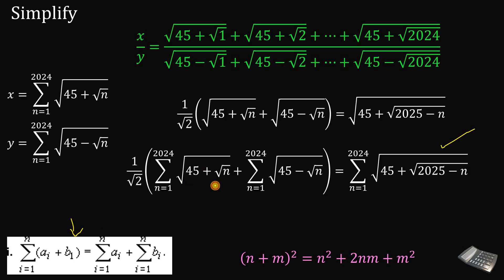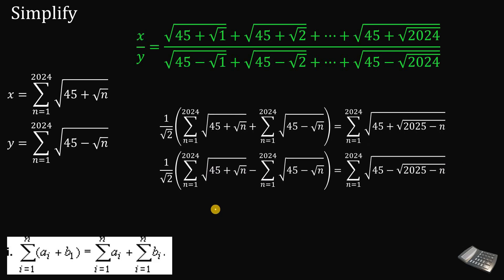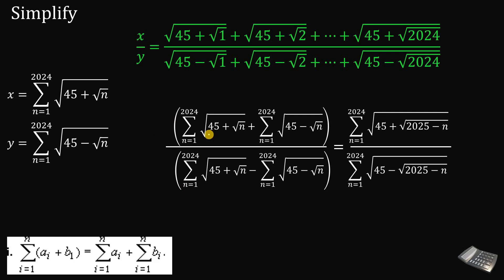Now if we subtract the two expressions instead of adding, we get: one over square root of 2 times (x minus y) equals the summation of square root of 45 minus square root of 2025 minus n from n=1 to 2024. We then divide these two equations. The factor of one over square root of 2 appears in both numerator and denominator and cancels out. The left-hand side becomes x plus y over x minus y, where the full summation expressions represent x and y respectively.